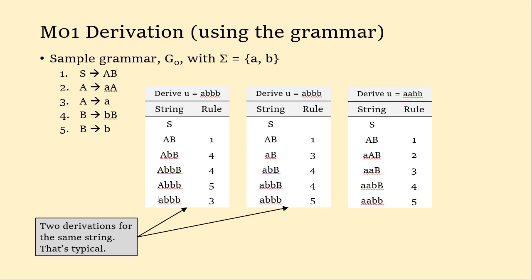So there's a derivation for the string abbb. We can do another derivation for that: start with S, go to AB, then instead of getting all the B's first, I get the A first. I use rule three to replace non-terminal A with terminal a, then use rule four, rule four, rule five to manufacture B's, and finally rule five at the end to stop. It's normal and okay to have multiple derivations for the same string.